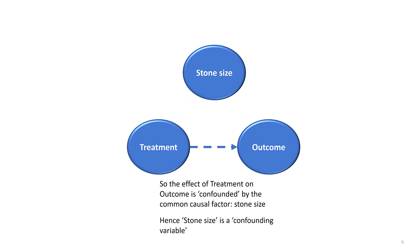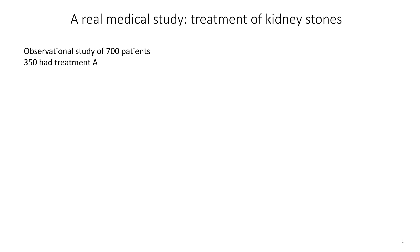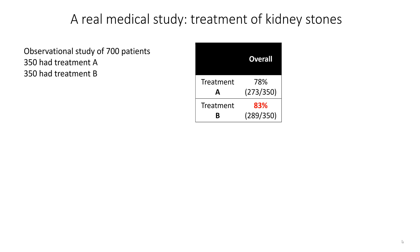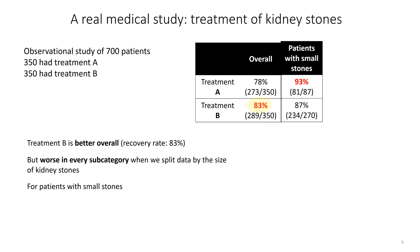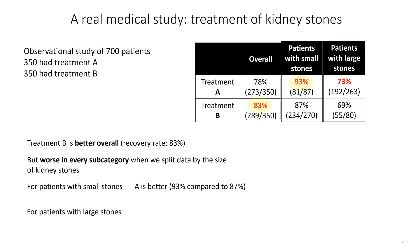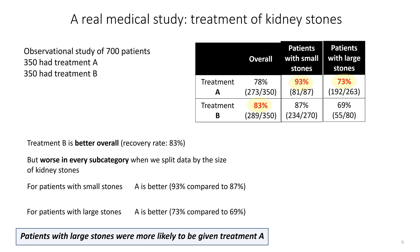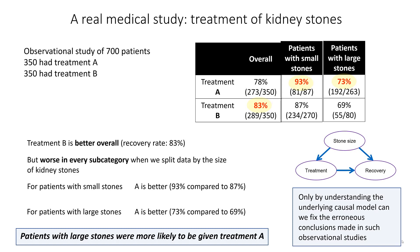Hence, stone size is what we call a confounding variable. This is actually based on a real observational study of 700 patients — 350 had treatment A, 350 had treatment B. Treatment B is better overall, with an 83% recovery rate. But it's worse in every subcategory when we split the data by kidney stone size. For patients with small stones, A is better: 93% compared to 87%. For patients with large stones, A is again better: 73% compared to 69%. Patients with large stones were clearly more likely to be given treatment A. Only by understanding the underlying causal model can we fix the erroneous conclusions made in such observational studies.